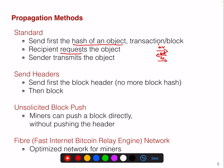So here we have peers A and B exchanging data. INV stands for inventory, and this contains typically the hash of the transaction or the block. The second method is send headers. If you want to receive a block, the block is made up of the header and the block contents.